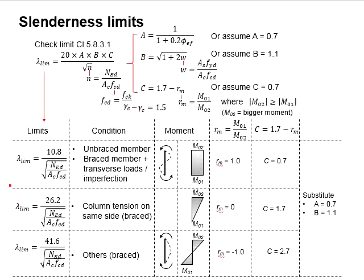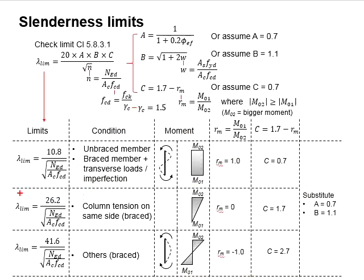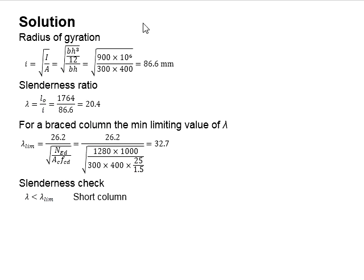The slenderness limit for the brace structures is given by these two equations. This represents a more critical situation for a brace structure. Therefore, we use this as a checking criteria. Substitute the relevant value into the equations. You obtain the limit equals to 32.7. Compare the slenderness ratio with the limit. It is found that the slenderness ratio is less than the limit.